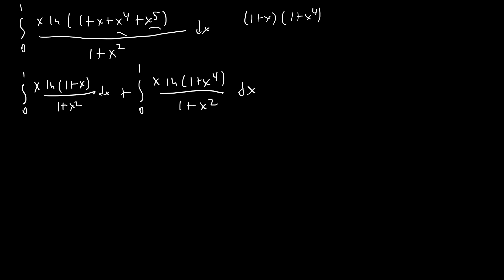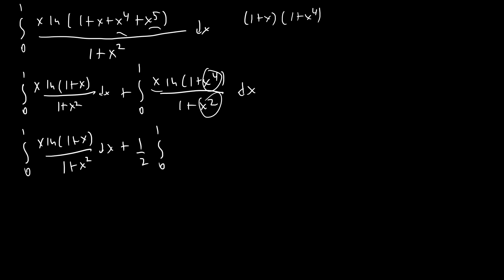These two integrals are actually pretty tough to evaluate individually. I tried for a long time using tangent substitutions and other methods but couldn't find something that worked. The one helpful observation is that everything is in terms of x² and we have an x out front, so substituting u = x² makes the integral a bit better. Renaming back to x, we get one half times the integral from zero to one of ln(1+x²)/(1+x) dx.